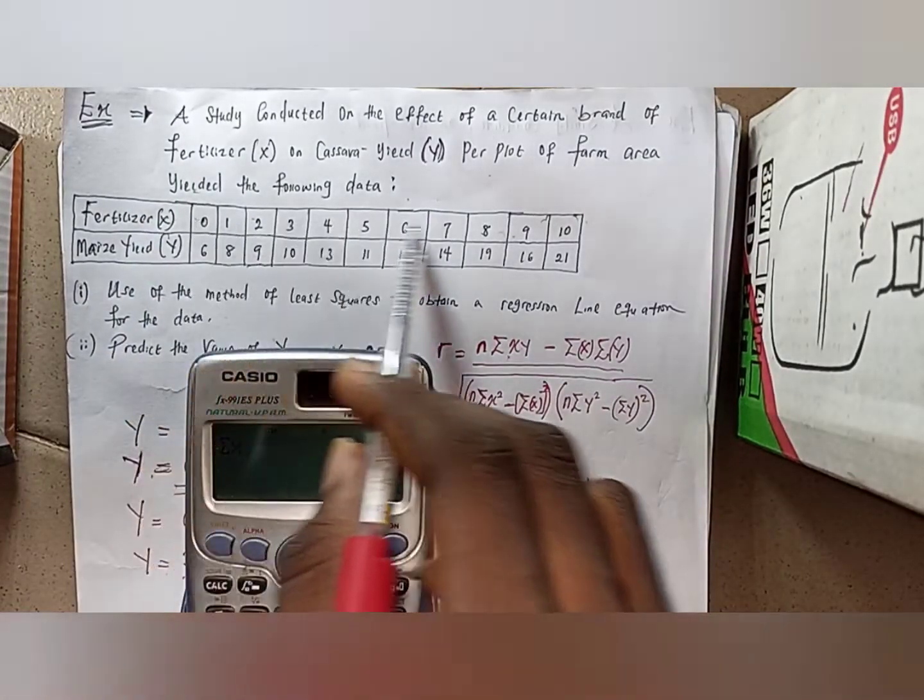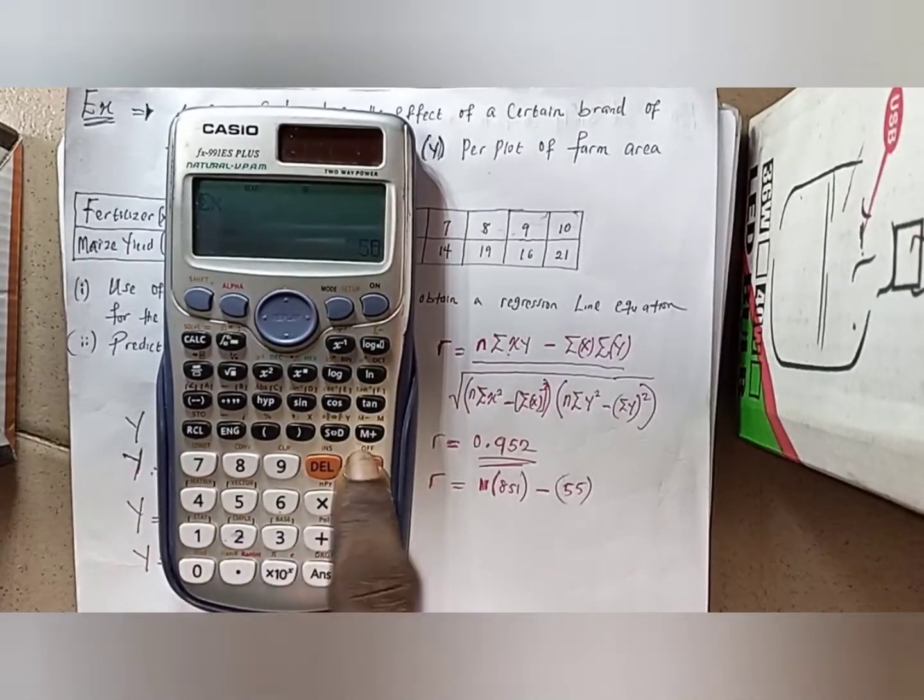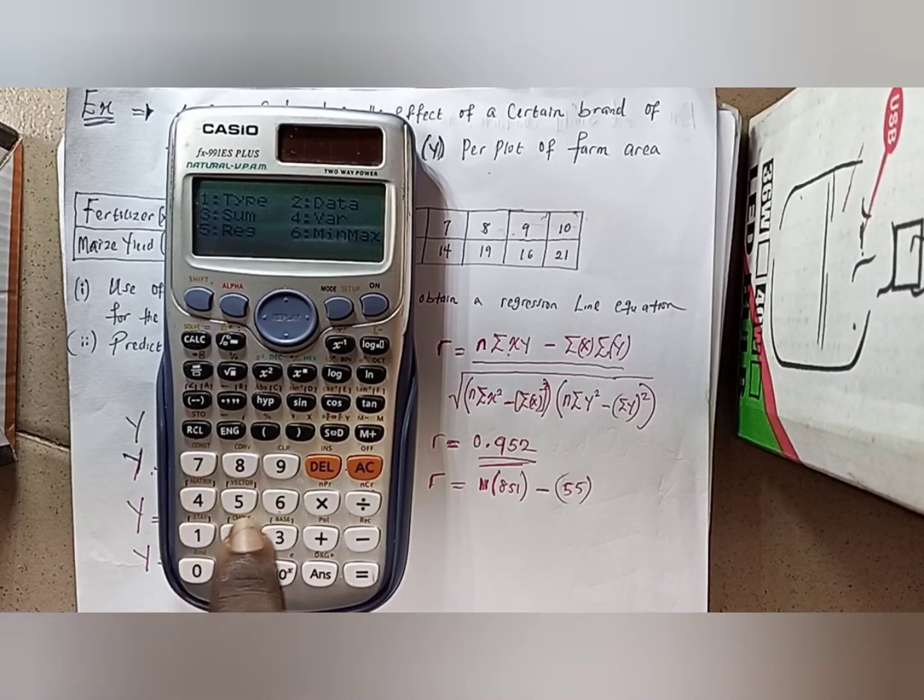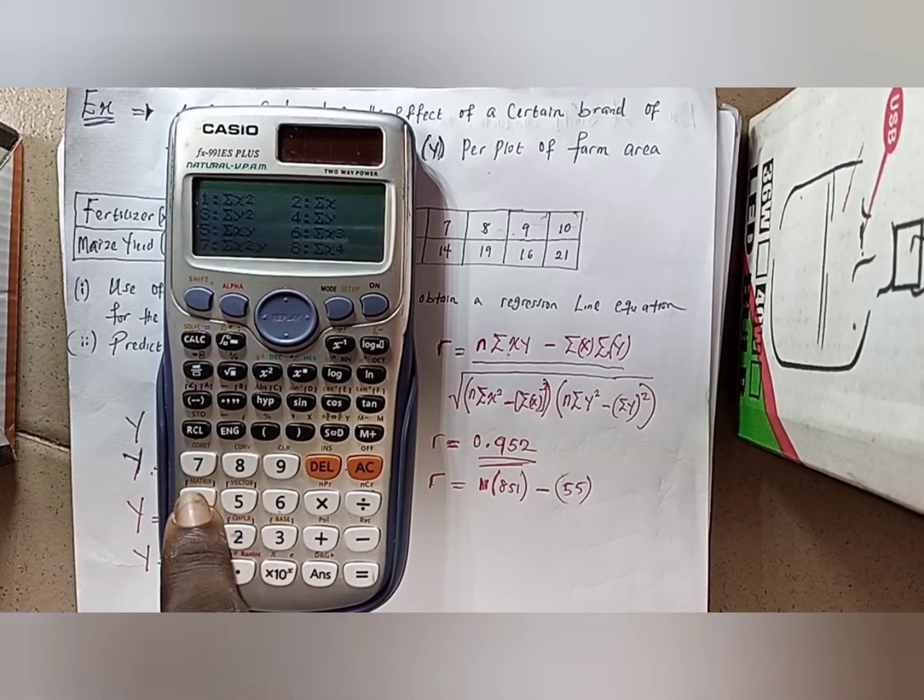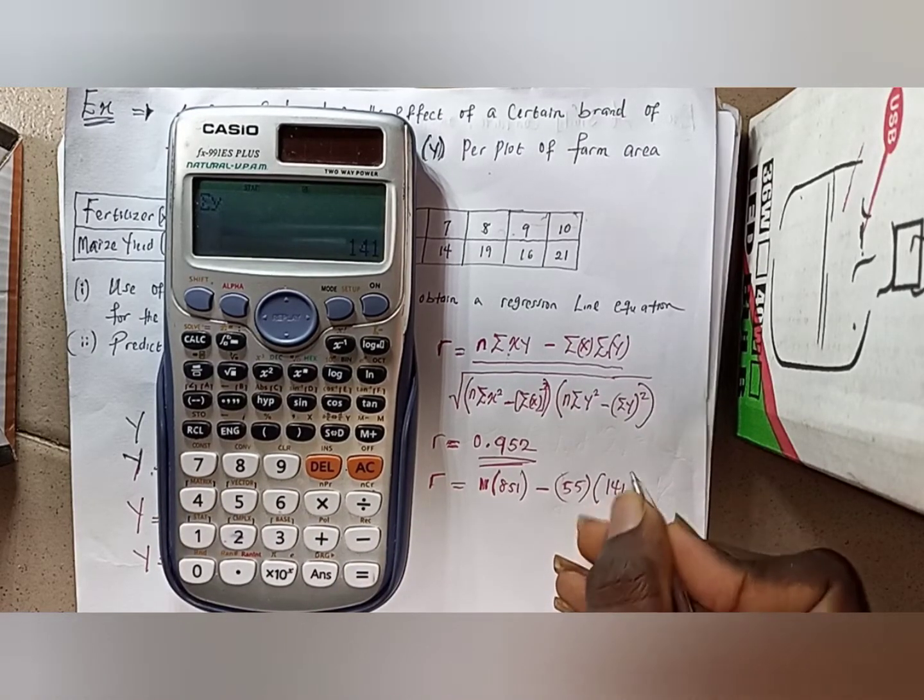Summation x is 55. This summation x is actually coming from whatever you have here when you sum all these things. And if I need summation y also, you press AC, then go for shift and 1, the same thing sum, then I go for number 4. Summation y gives me 141.